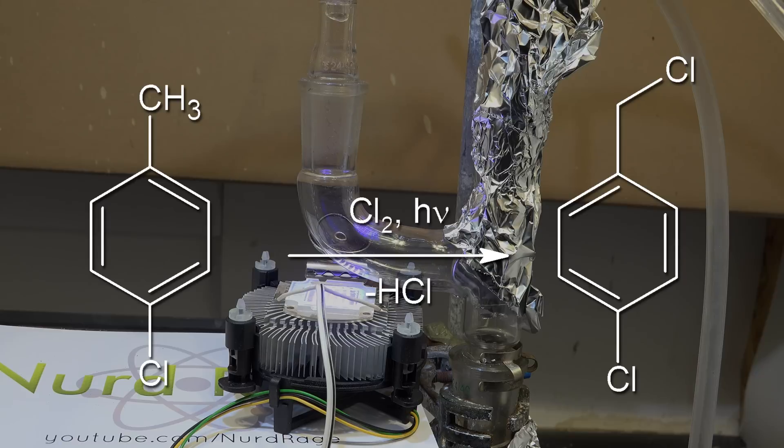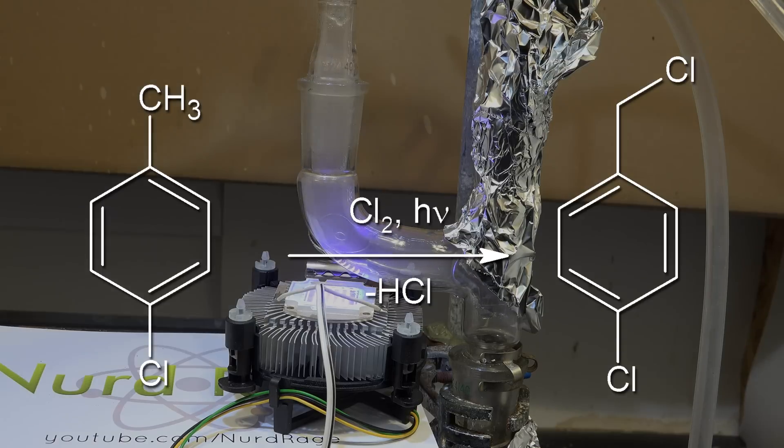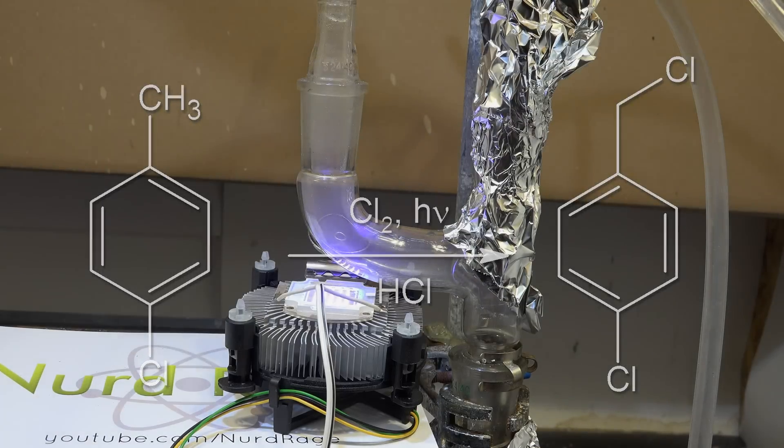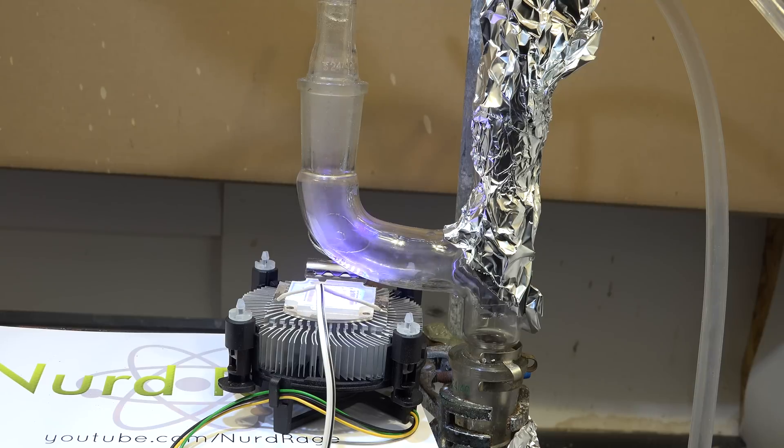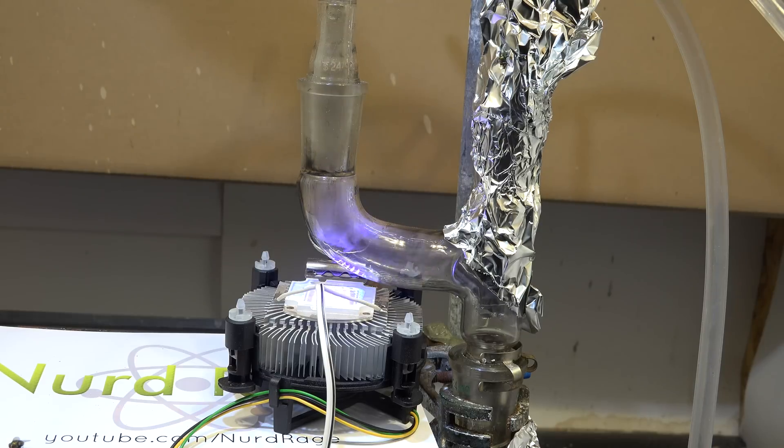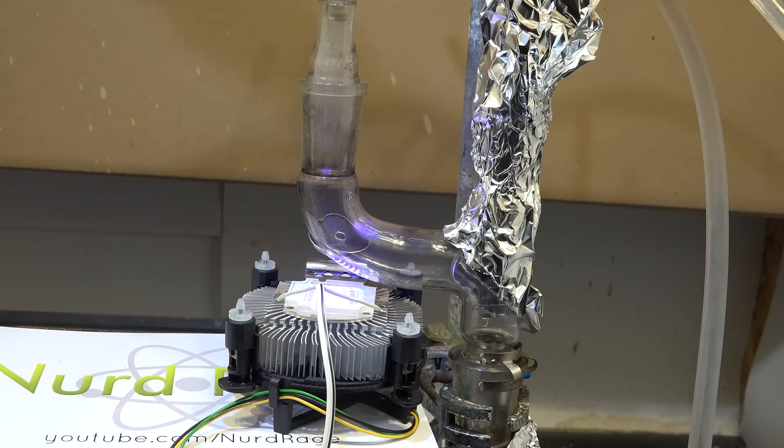What's happening is the ultraviolet light is initiating free radical chlorination. The light breaks up the chlorine into chlorine radicals. These chlorine radicals attack the methyl group on the p-chlorotoluene to form p-chlorobenzyl chloride as well as hydrogen chloride. The hydrogen chloride gas escapes out the top of the column but the high boiling p-chlorobenzyl chloride condenses and drips down into the flask. Since it has a higher boiling point than p-chlorotoluene it should stay in the flask and never get chlorinated.